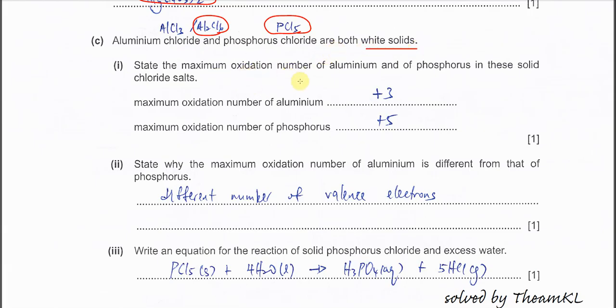State the maximum oxidation number of aluminum and phosphorus in these solids. Aluminum here is negative 6. This one is positive 6 over 2, so you get positive 3. PCl5 is very easy. Chlorine is negative 1 times 5, negative 5, so phosphorus must be positive 5.